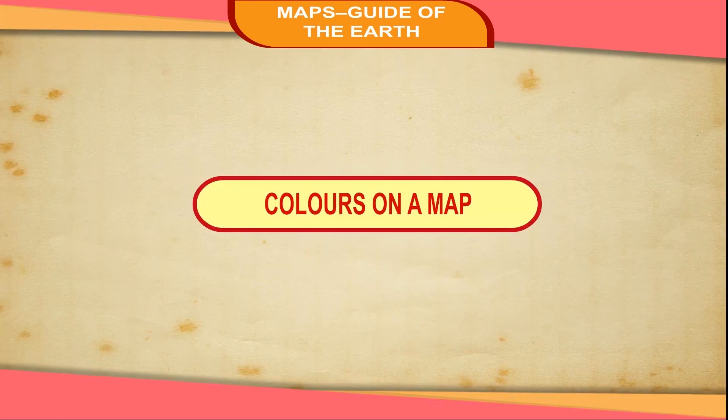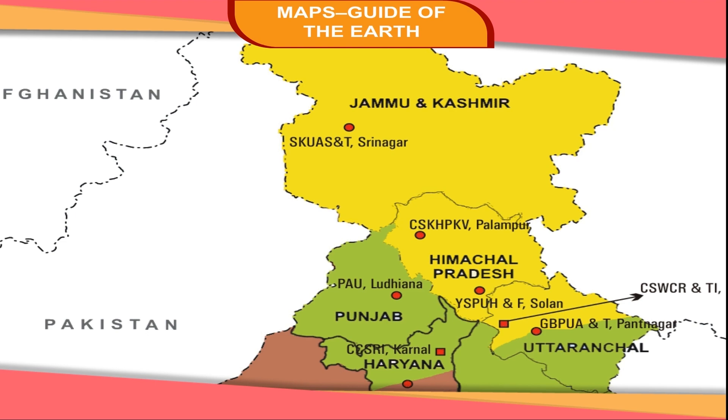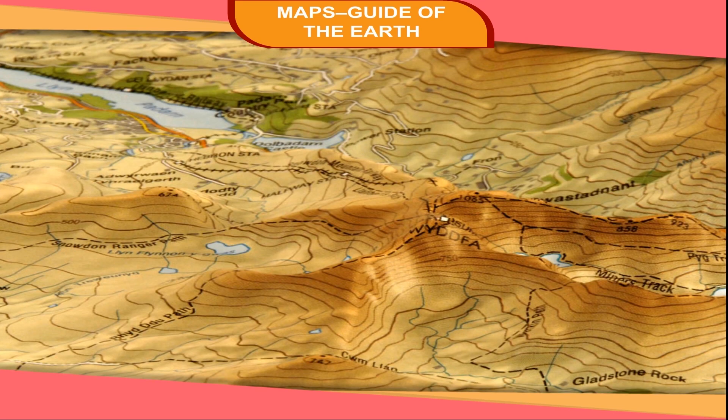Different colors are used to show various features and water bodies on a map. Water bodies on a map are shown in blue, plains in green, highlands in yellow or brown, and mountains in dark brown. Ice-covered mountains are colored purple and white.